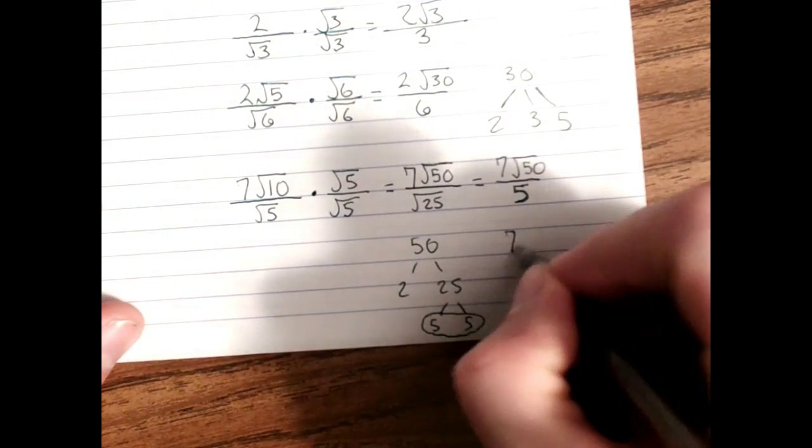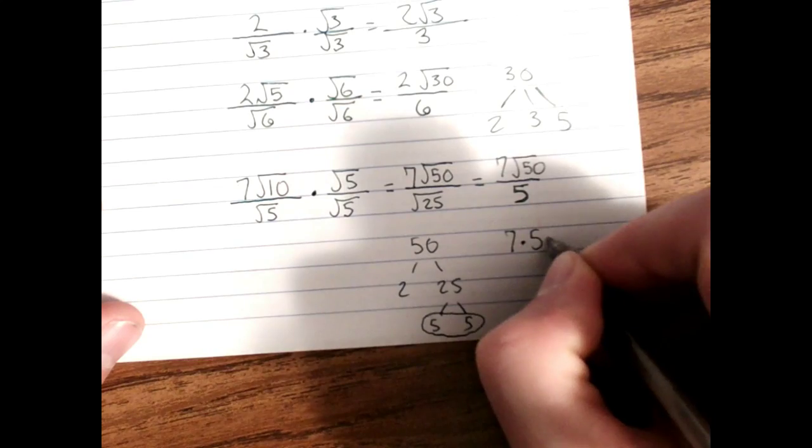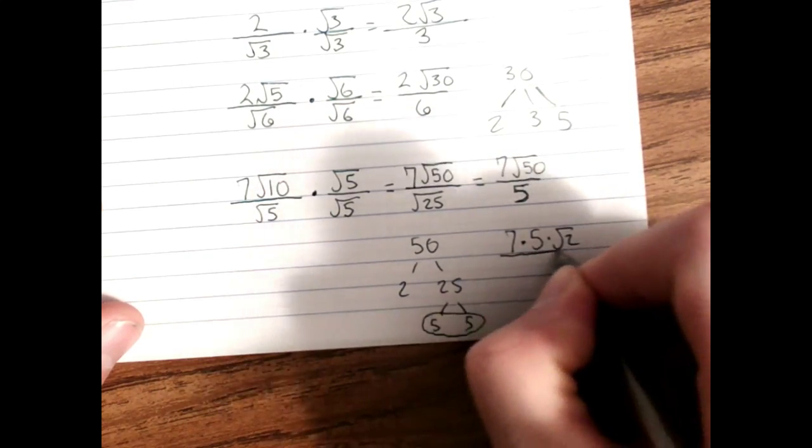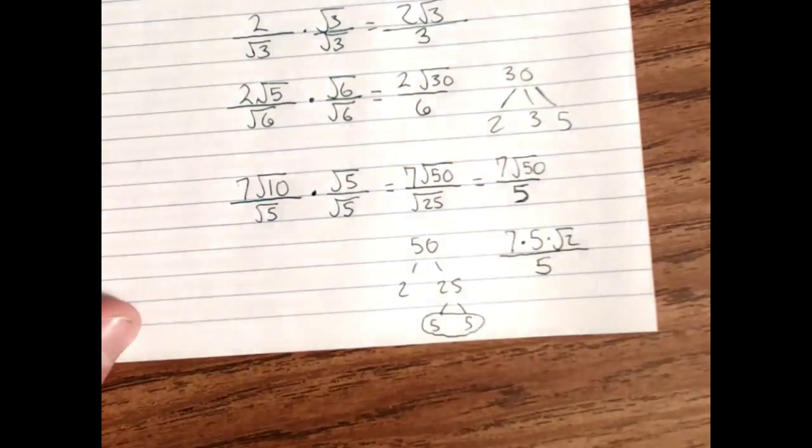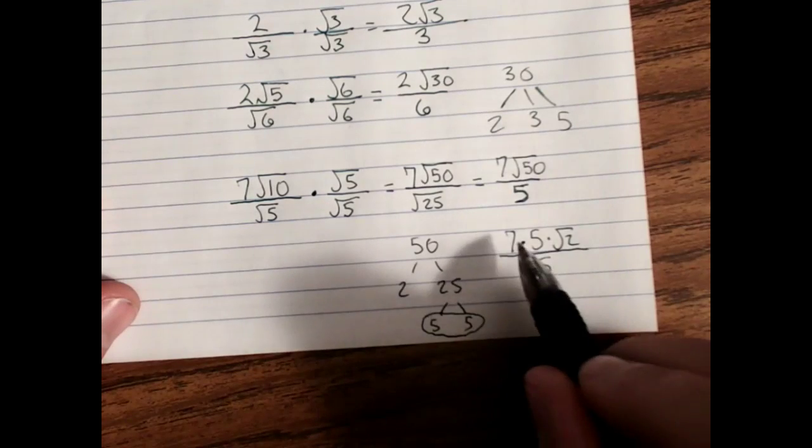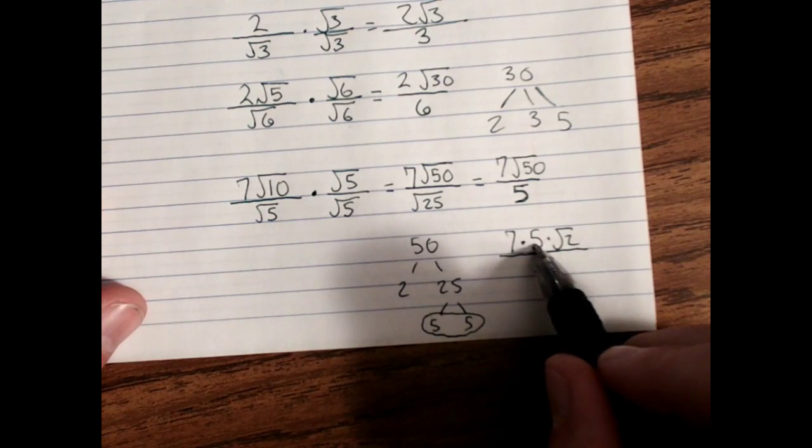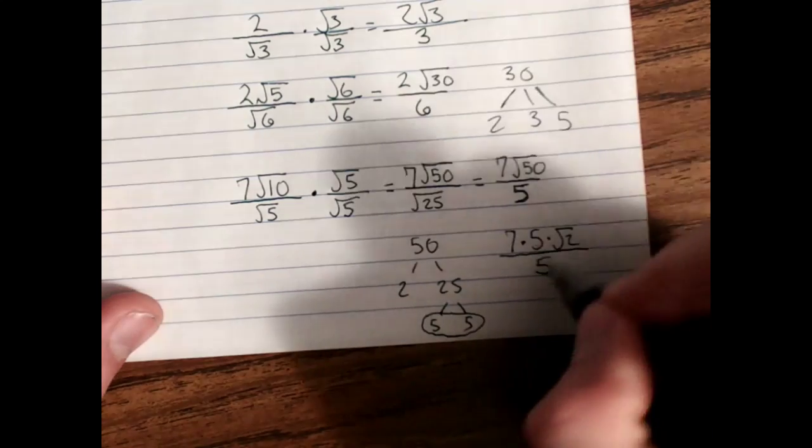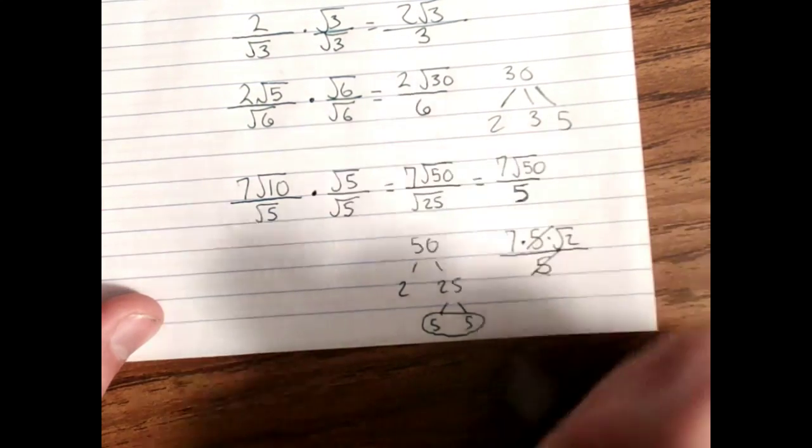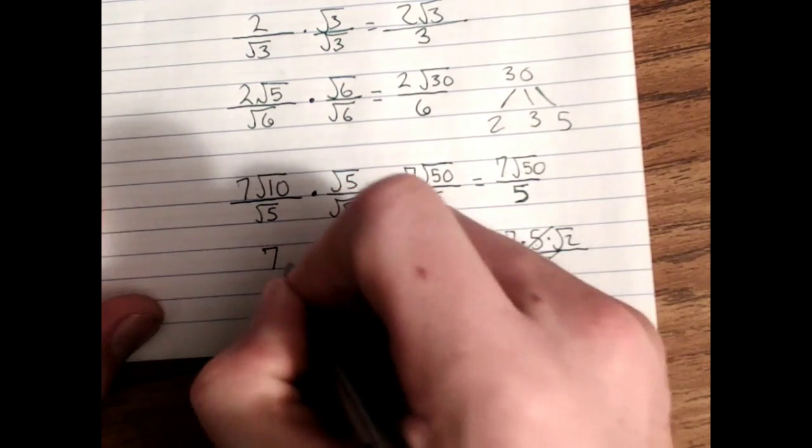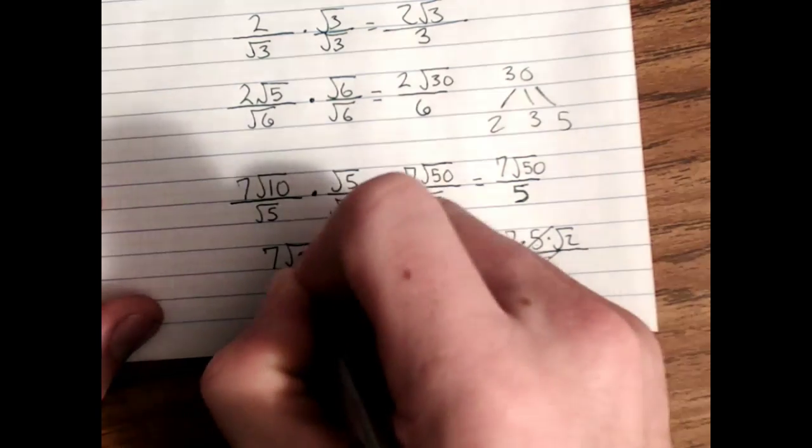For 7 times 5 times root 2, all over 5. And then we simplify. You can multiply 7 times 5 to get 35 and then divide by 5 to get back to 7, or you could just cancel the common factors for a final answer of 7 root 2.